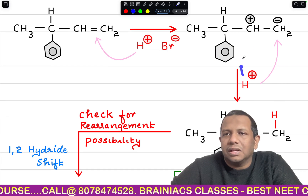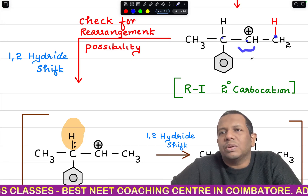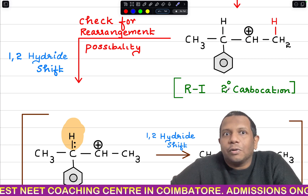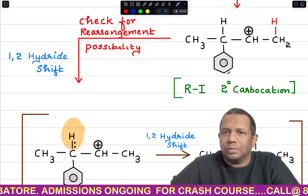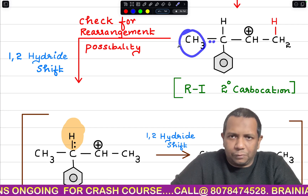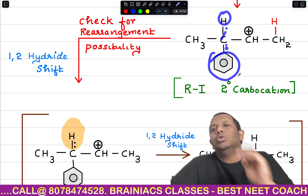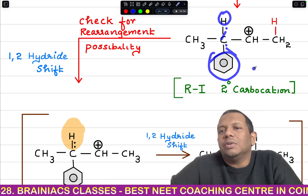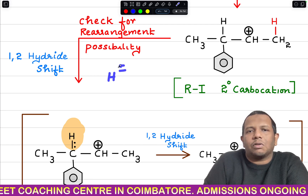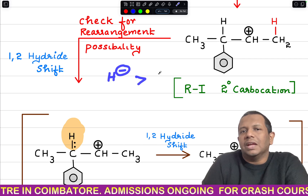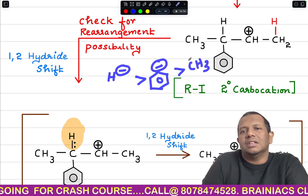H⁺ will attack the negative charge and you get a 2° carbocation — connected to two other carbon atoms. Now check for the possibility of rearrangement. A methyl group, a hydrogen, and even a phenyl group are each present with a pair of electrons. The shifting order is: H⁻ has the highest tendency to shift, next comes phenyl, then CH₃⁻.